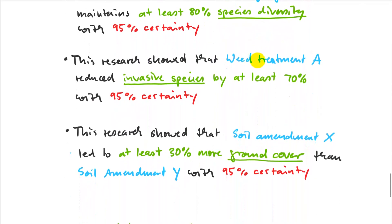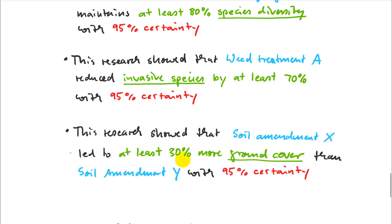This lets me make precise statements like: this research showed that grazing treatment X maintains at least 80% of species diversity with 95% certainty. That's not really possible in multivariate analysis of variance. Other examples: wheat treatment A reduced invasive species by at least 70%, using a subset of species as a summary; or soil amendment X led to at least 30% more ground cover in a reclamation experiment with 95% certainty. These are strong, precise statements — much better than just saying there's a significant difference with p equals 0.05.